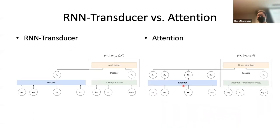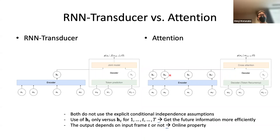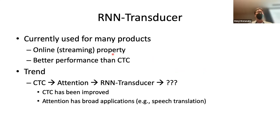The last part is RNN Transducer versus attention. They look very similar, but the most important functional difference is that attention has to consider all input frames when computing the probability at position t, while RNN Transducer only uses the single input representation at position t. This difference has quite a lot of pros and cons, which I will explain on Wednesday. That's it — thank you so much.